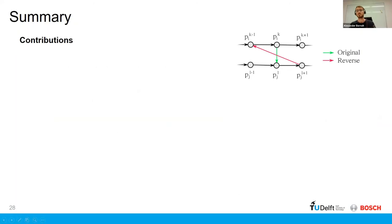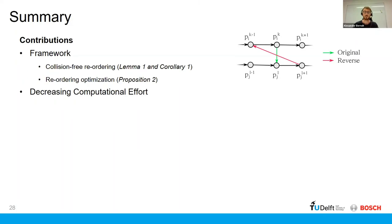So in summary, the contributions of this paper are that we introduced a framework which allows us to guarantee collision-free reordering of AGVs. And then we've also formulated that as an optimization problem, which allows us to minimize the cumulative route completion time of these AGVs. And then we also presented these two methods to decrease the computational effort of this optimization problem, which allows us to realistically employ this in a real-time application.